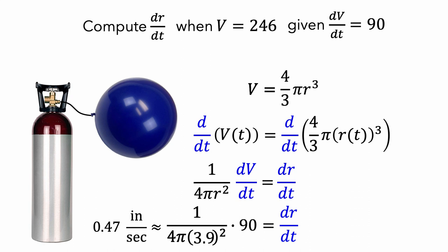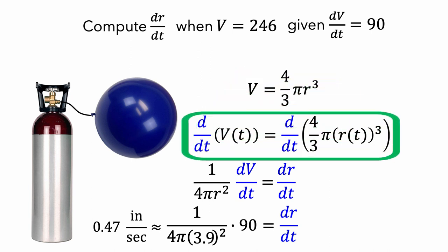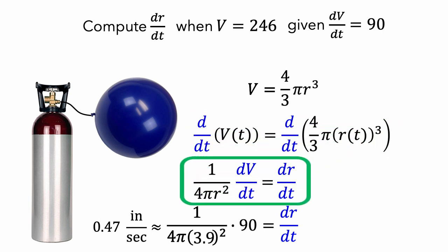Let's think about how we arrived at this answer. We started with a formula that related v and r. Then we thought about both v and r as functions of time, and differentiated each side with respect to time. We had to use the chain rule to get the equation that related dv/dt and dr/dt. This equation is called a related rate formula, since it defines the relationship between two instantaneous rates of change, or derivatives.